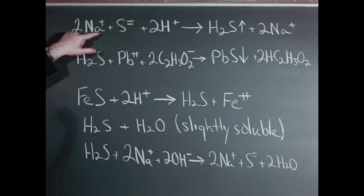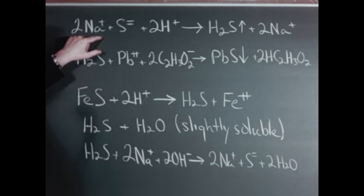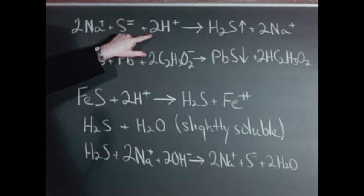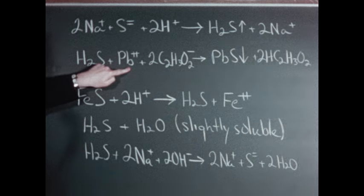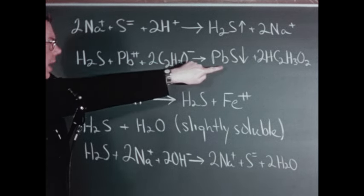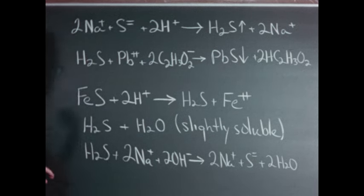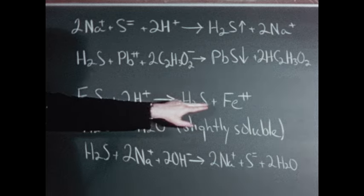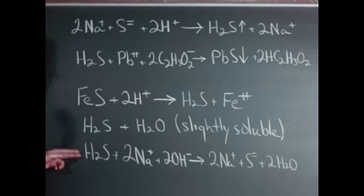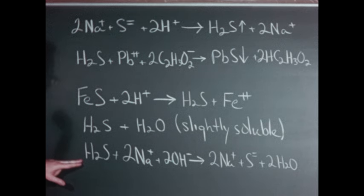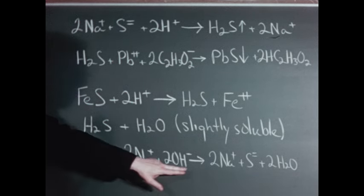We tested solutions of sodium sulfide with several different acids and found that it didn't make any difference whether the acid — the source of these hydrogen ions — was sulfuric, hydrochloric, or acetic acid. In any of the three cases, the acid was strong enough to cause hydrogen sulfide to be liberated from a solution of sodium sulfide. We tested for the hydrogen sulfide using a solution of lead acetate on filter paper; the lead acetate paper turned black due to the precipitation of lead sulfide. We then set up a generator utilizing the reaction between ferrous sulfide and hydrochloric acid to produce hydrogen sulfide. We then tested the solubility of hydrogen sulfide in water and in sodium hydroxide solutions. We saw that hydrogen sulfide was only slightly soluble in water, but that in sodium hydroxide solutions, hydrogen sulfide dissolved rapidly because it reacted with the sodium hydroxide forming sodium sulfide and water.